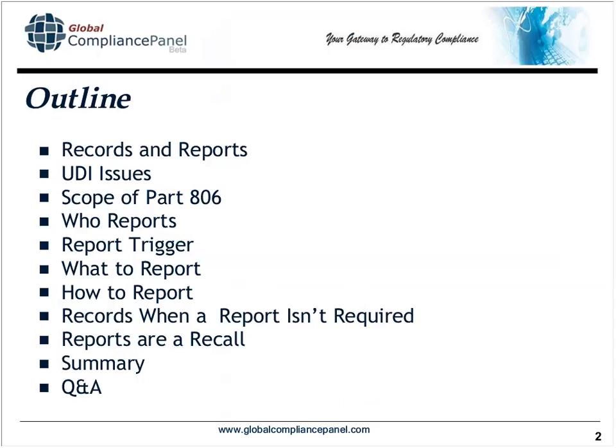We're going to distinguish between records and reports — this is going to be very important in this area. There is a new FDA regulation about unique device identification, so we'll talk about that. Then we'll look at the scope of Part 806, which is where the corrections and removals regulations are. We'll cover who reports, when to report, what to report, and how to report. We'll also discuss cases where you must keep records but don't have to report to FDA. Then we'll turn to the problem of recalls, since reports made to FDA are classified as recalls. We'll cover the draft FDA guidance document, then do a summary and open up for Q&A.